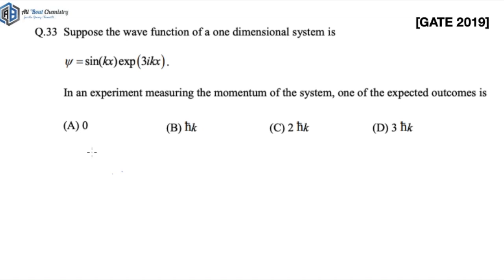I'm starting a new series called Conceptualizing Gait, in which I'll be taking concept-wise questions from the Gait exam where a particular concept has been asked. I'm starting this particular series with a question from Gait 2019, and this particular question was from Quantum Chemistry.